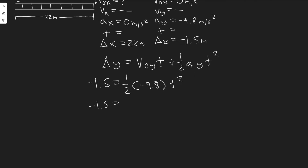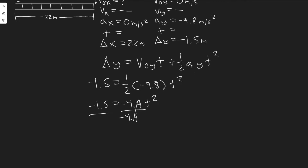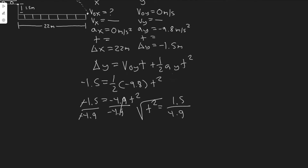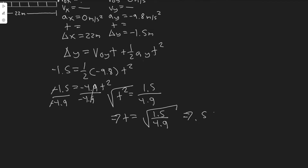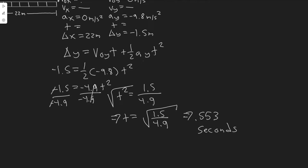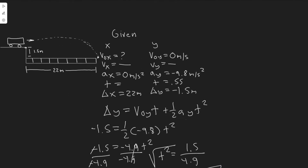Multiplying this out, one half times minus 9.8 is minus 4.9. So we have minus 1.5 equals minus 4.9 t squared. Dividing both sides by minus 4.9, we get t squared equals 1.5 over 4.9. Square rooting both sides to get t by itself, t equals the square root of 1.5 divided by 4.9. When you do this, you get t equals 0.553 seconds.